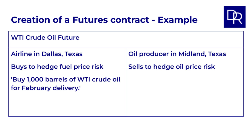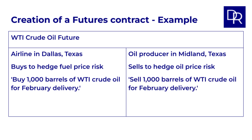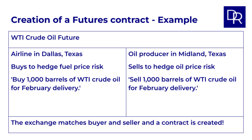The Dallas Airline calls their energy broker and says, 'Buy me 1,000 barrels of WTI crude oil for February delivery.' The Midland oil producer calls their broker and says, 'Sell 1,000 barrels of WTI crude oil for February delivery.' Brokers enter these orders and the exchange's computer system matches them. The futures contract is created.